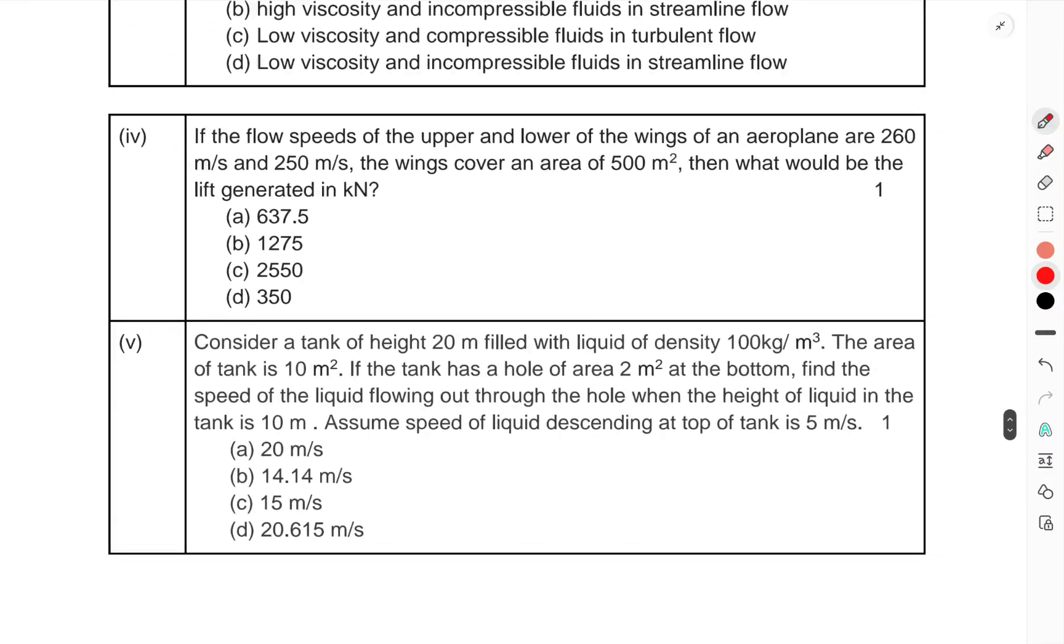Question 12 part (i), if the flow speed of the upper and lower wings of an airplane are 260 m/s and 250 m/s, and the wings cover an area of 500 m², then what would be the lift generated in kilonewtons?